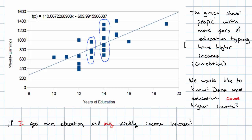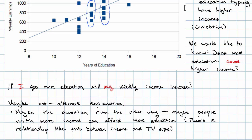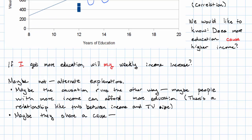Why is it that we might see this kind of relationship where more education is related to greater income, but it's not the case that more education is causing the greater income? Maybe the causation runs the other way — maybe it's the case that people with more income can afford more education. There's a relationship like this between income and TV size. People with more income typically have bigger TVs, but you would never suspect that getting a bigger TV will increase your income.